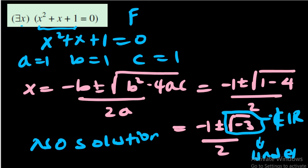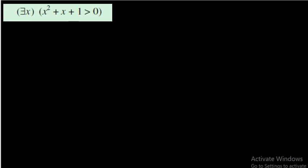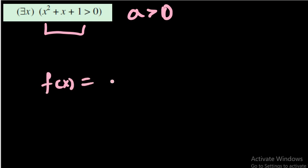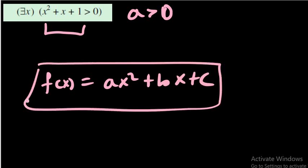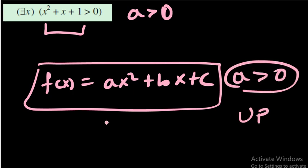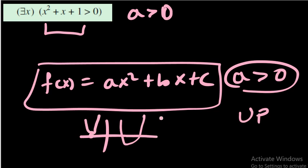The next question asks: there exists x such that x² + x + 1 > 0. We already found this quadratic has no real zeros. Since the leading coefficient a > 0, this is an upward-opening parabola. Such a parabola may cross the x-axis twice, touch it once, or never touch it at all.